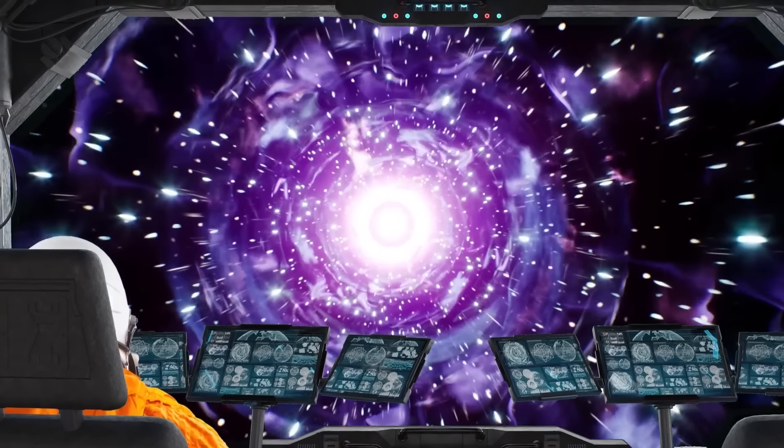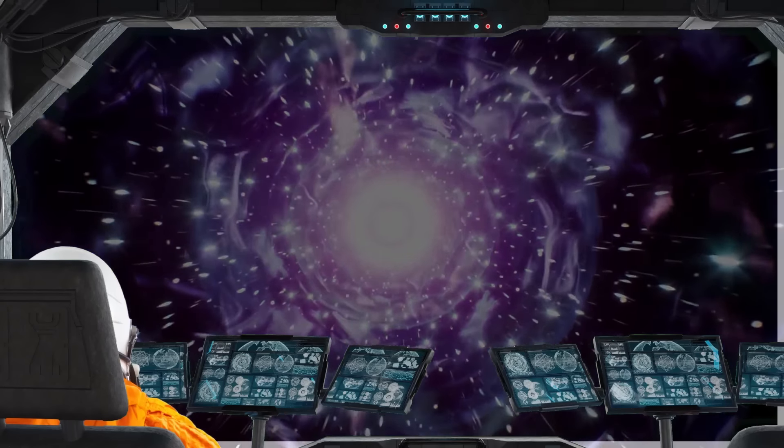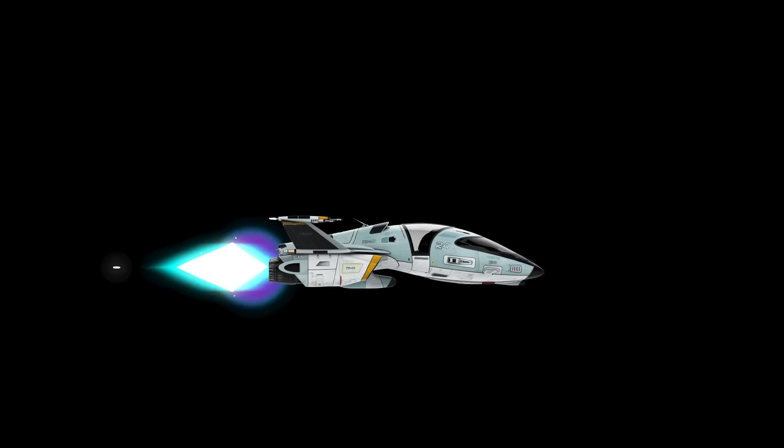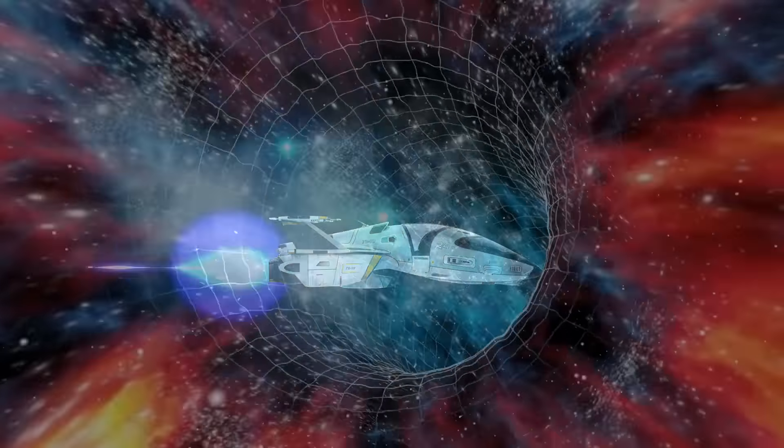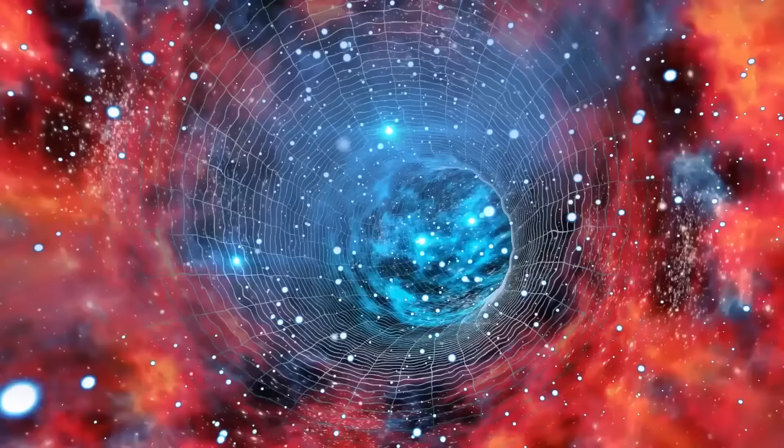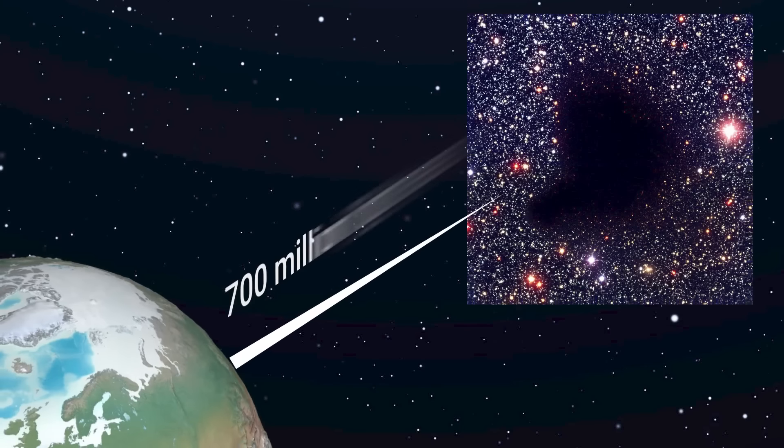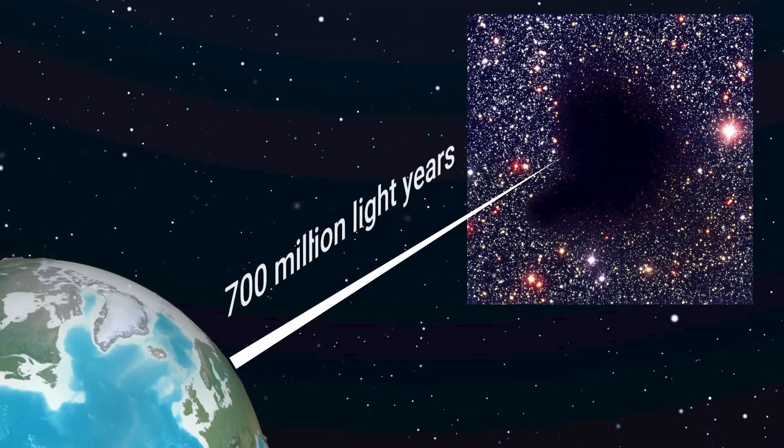And then, suddenly, you see nothing. At first, you're horrified. Something has gone wrong, and you've accidentally entered a black hole? Has your equipment malfunctioned? Because it seems that at a distance of 700 million light-years away from Earth, there's a hole.